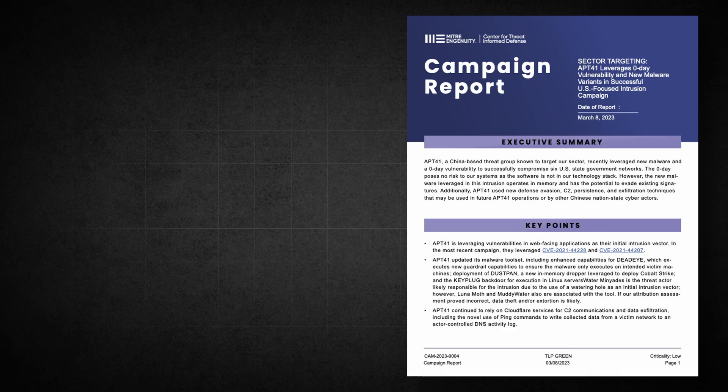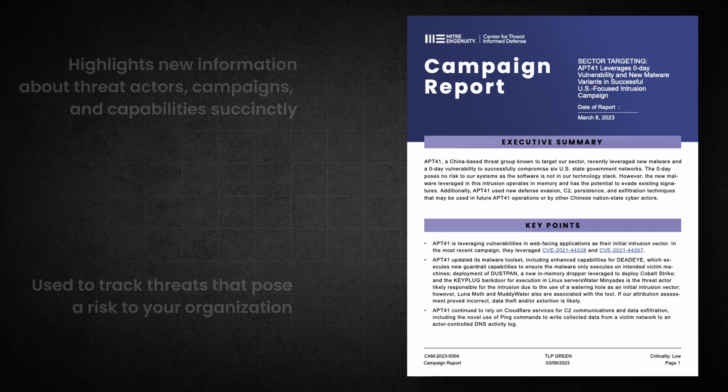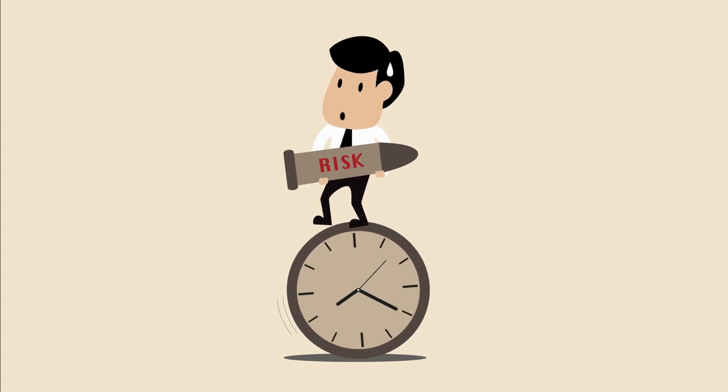The third report type is the campaign report, or CHANGE. The campaign report highlights new information about threat actors, campaigns and capabilities. When new intelligence comes in about a topic your team is tracking, a campaign report should be created if it alters the risk posed to your organization. These reports do not include all information about a topic — instead they are succinct reports that convey a change to the risk calculus your intelligence consumers should be aware of.